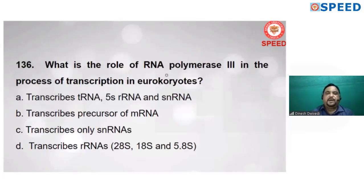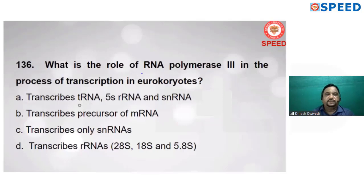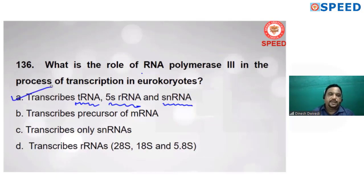What is the role of RNA polymerase III in the process of transcription in eukaryotes? RNA polymerase III already synthesizes (transcribes) tRNA, 5S rRNA, and snRNA (small nuclear RNA). Alternate A is correct.